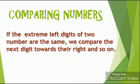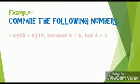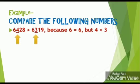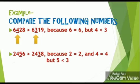If the extreme left digits of two numbers are the same, we compare the next digit towards the right, and so on. For example, compare 6428 and 6319. Both numbers have the same number of digits, and the extreme left digit in both is the same. So we move towards the right — the next digit in the first number is 4, while in the second number it is 3. Comparing 4 and 3, we can see that 4 is the greater one, so 6428 is the greater number.